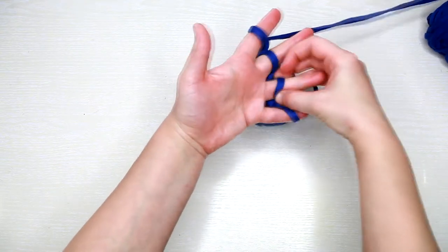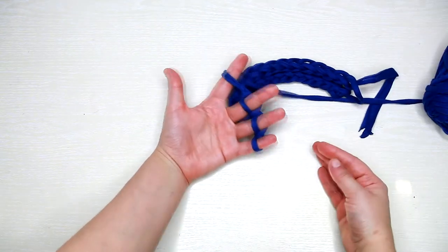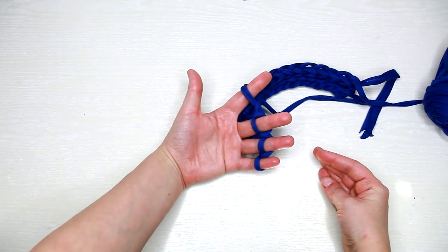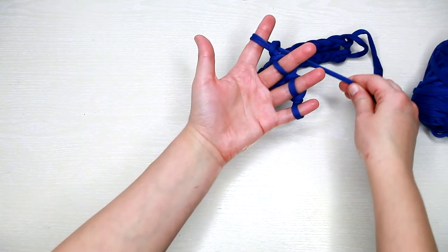You need to bind off. In order to do that, starting from your pinky, take the loop and pass it onto the next finger. In this case, pass it from the pinky to the ring finger.